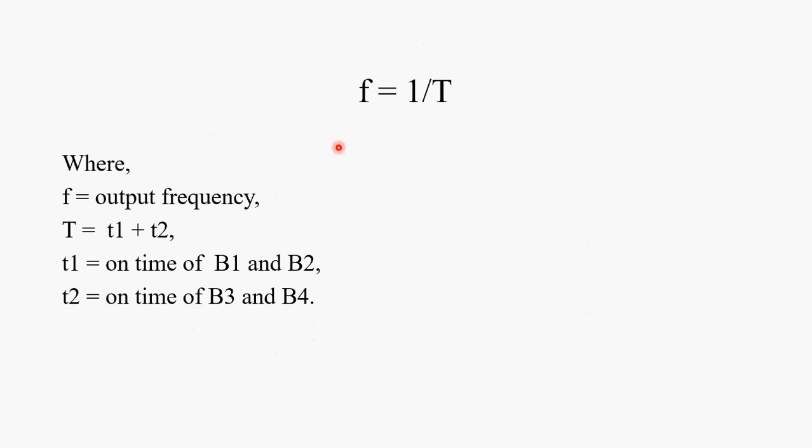If you want to get a frequency like 50 Hz, the time T is equal to 1 upon F, that is nothing but 20 milliseconds. And T1 is equal to 10 milliseconds, and T2 is equal to 10 milliseconds. You have to turn on B1, B2 for first 10 milliseconds and you have to turn on B3 and B4 for next 10 milliseconds.